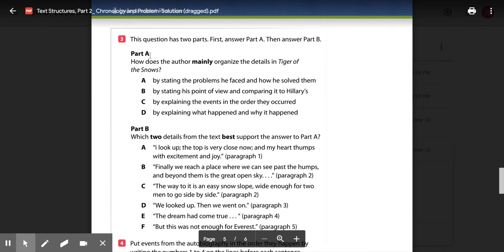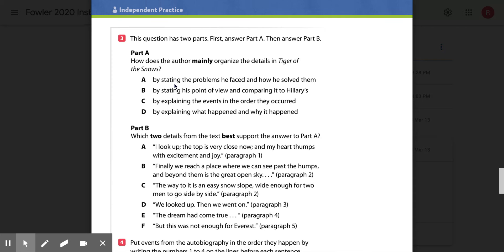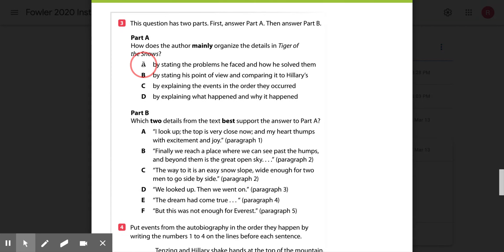Three, how does the author mainly organize the details in Tiger of the Snows? A, by stating the problems he faced and how he solved them, B, by stating his point of view and comparing it to Hillary's, C, by explaining the events in the order they occurred, or D, by explaining what happened and why it happened.